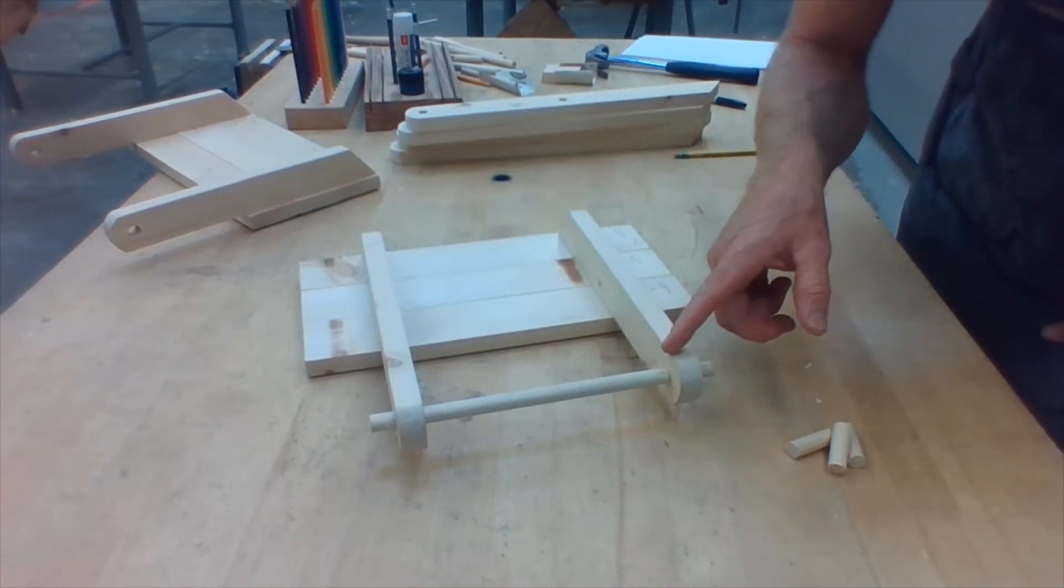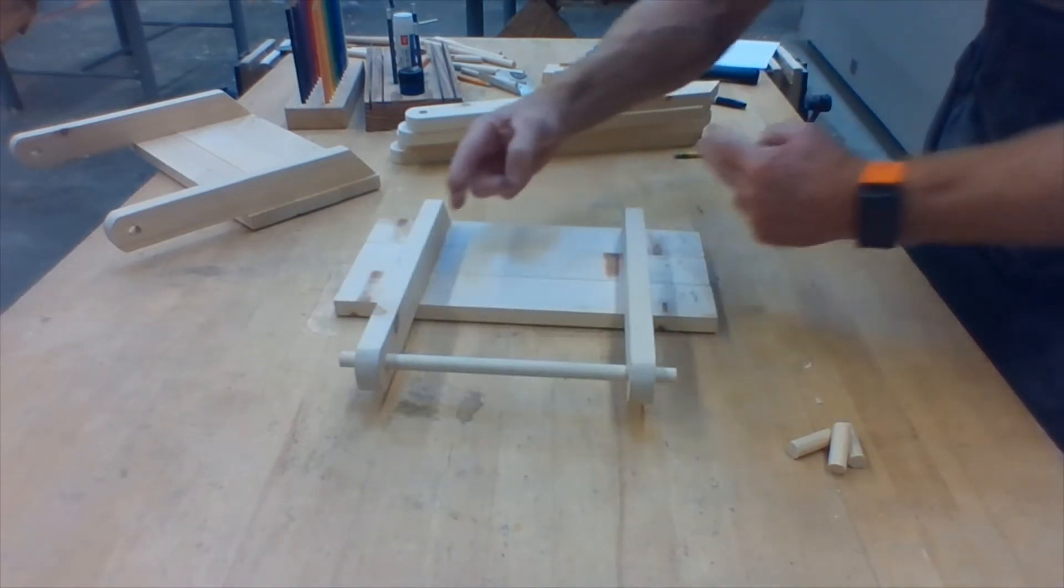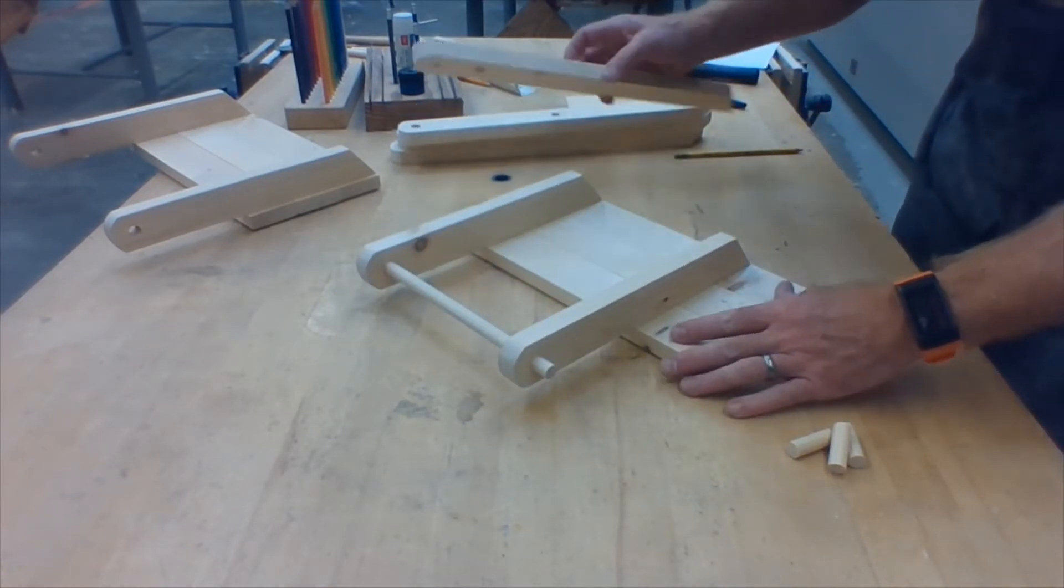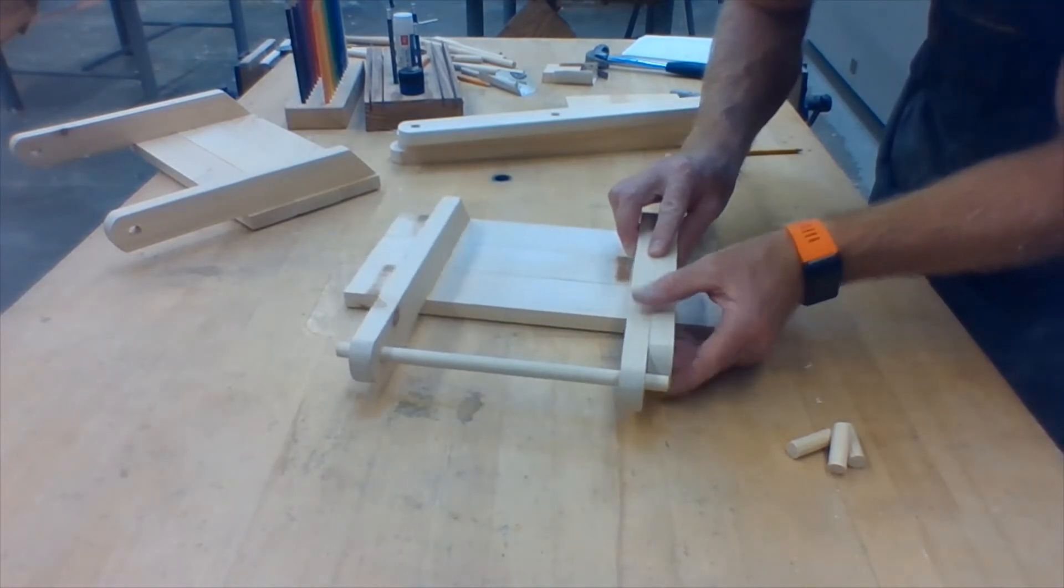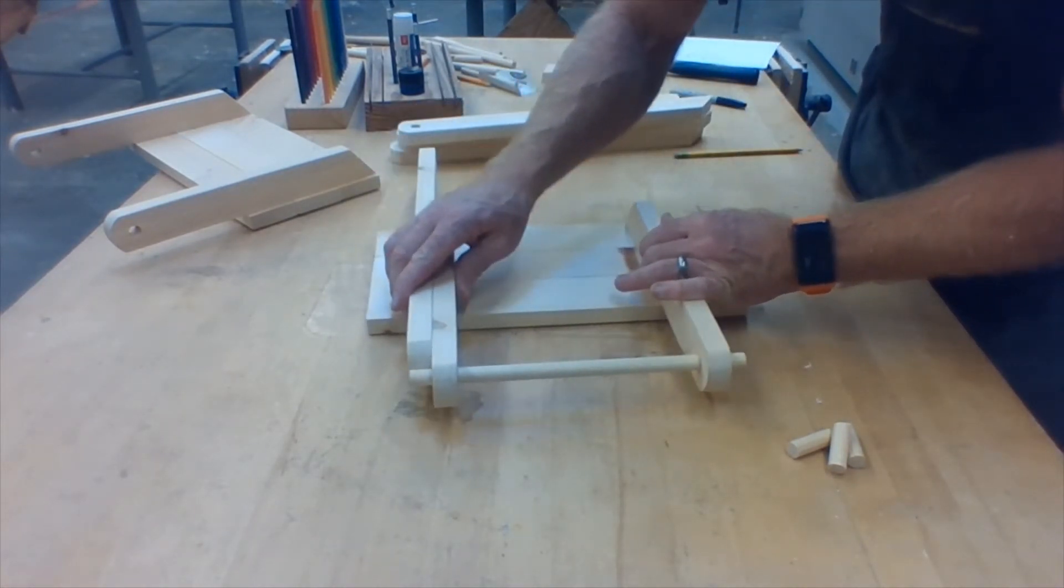Now that you've got the dowel going all the way through both holes of the seat supports on the narrow set of seat supports, you need to check that it doesn't stick out past the side of the leg when you put it beside the seat support.